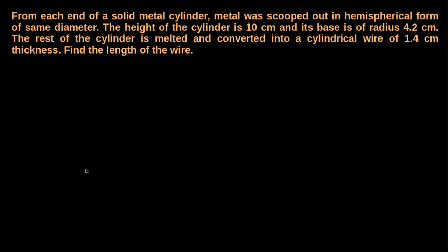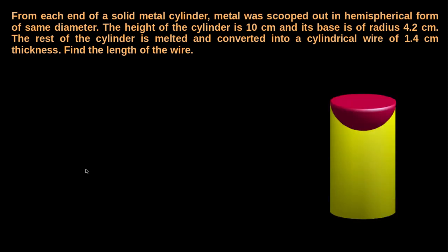Here, from a solid cylinder, on either end, some part of metal is scooped out in the form of a hemisphere of diameter equal to the diameter of the base of the cylinder. After this, the remaining solid is melted and made into a cylindrical wire of thickness 1.4 cm. We have to find the length of that wire. For this, we need to find the volume of the wire, which is nothing but the volume of the remaining cylinder. The volume of the remaining cylinder is obtained by subtracting the volume of two congruent hemispheres scooped out on either end from the volume of the whole cylinder.